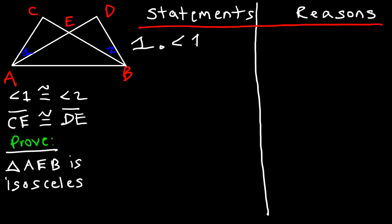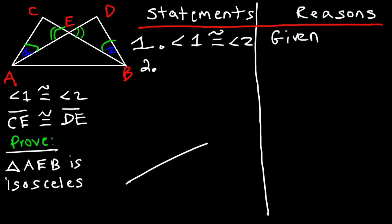Statement one: angle one is congruent to angle two — given. Mark it on the graph. For statement two: whenever two lines intersect they produce vertical angles, and vertical angles are congruent. So we can say angle AEC is congruent to angle BED. The reason: vertical angles are congruent.